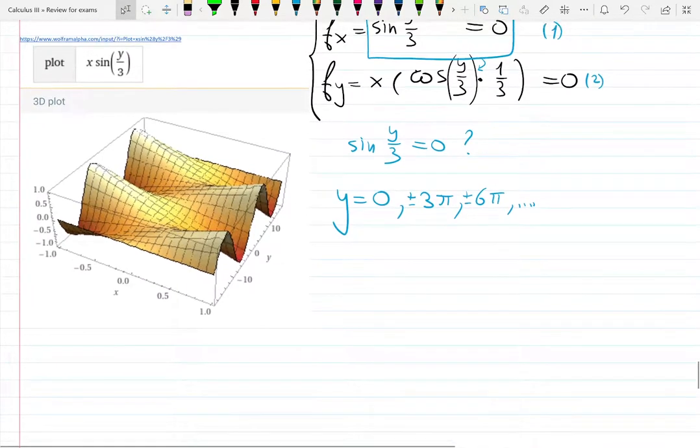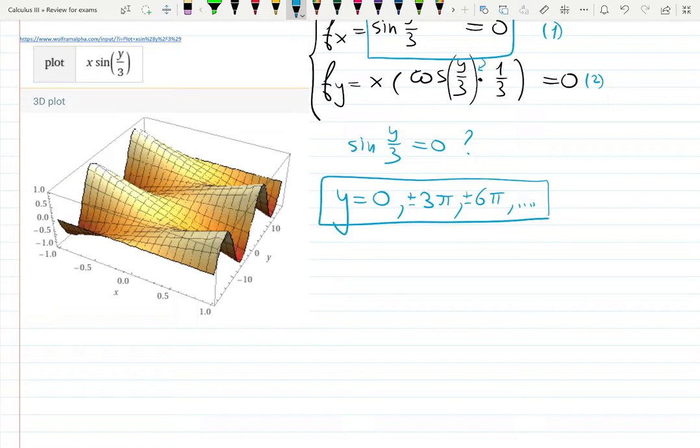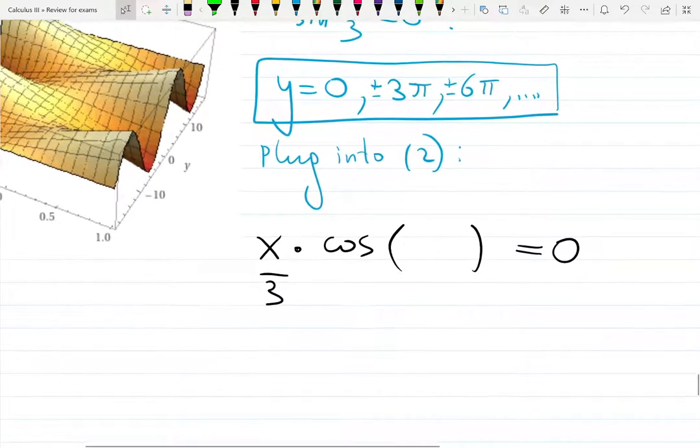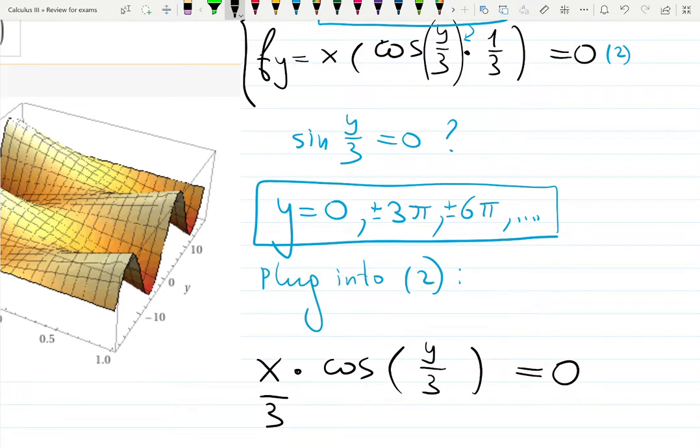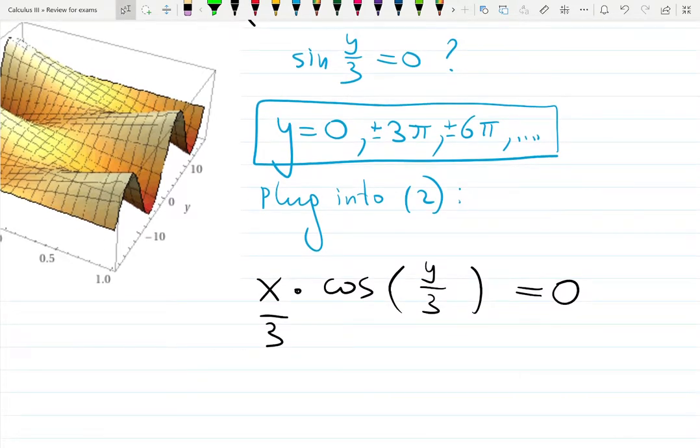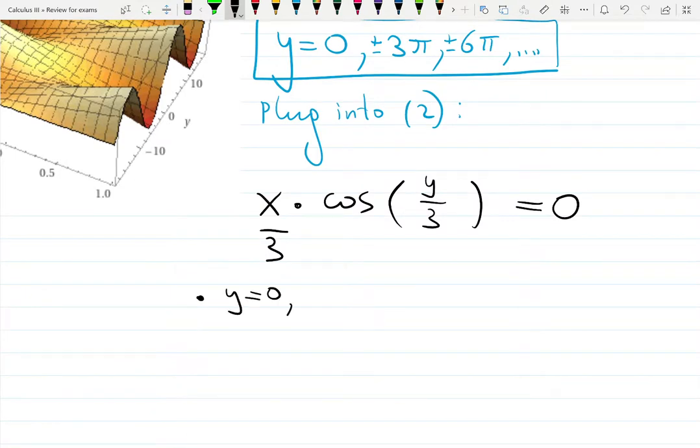You plug these points, infinitely many points, into equation number two. That will give you the partial derivative with respect to y, which is now x multiplied by cosine of all these points times 1/3. I would move this 1/3 over here. Now solve for x to make it zero. When y is zero, then I have x/3, cosine of zero is one, gives you zero. So x is zero.